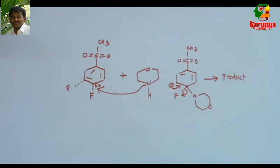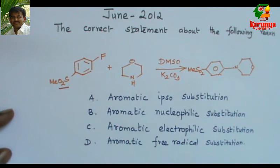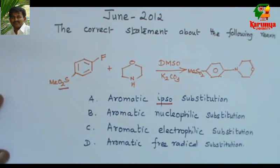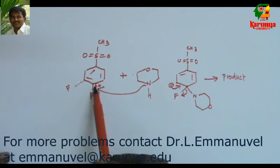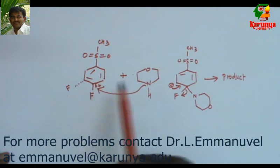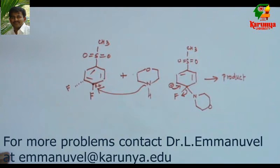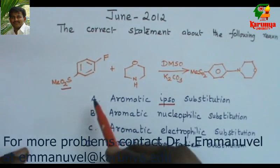Now let us go to the given options. First one, it is aromatic ipso substitution. What do you mean by ipso substitution? That is nothing but the nucleophile attacks the carbon that contains the leaving group. The nucleophile attacks this carbon which has the leaving group. So that is called ipso attack. Generally it is used in aromatic system. So the first statement, this is correct.